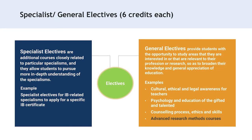In terms of specialist and general electives, also six credits each: specialism electives are additional courses closely related to particular specialisms, allowing students to pursue a more in-depth understanding. For IB-related specialisms, students may apply for a specific IB certificate. General electives provide students with the opportunity to study areas relevant to their profession or research to broaden their knowledge of education — for example, cultural, ethical and legal awareness for teachers, psychology and education of the gifted and talented, counseling processes, ethics and skills, and advanced research methods.